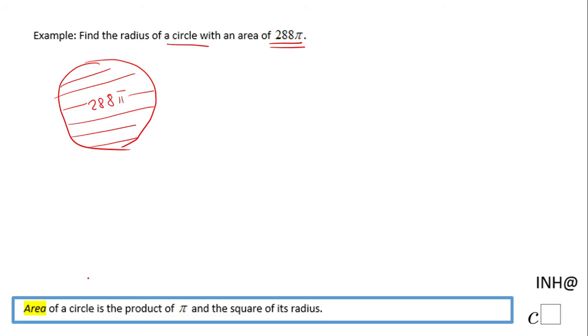For that reason I'm going to use what I said here: the area of the circle is the product of π and the square of its radius. So this is the formula for the area of the circle. And in this one I'm going to replace area of 288π and I'm going to have an equation now. 288π equals πr².